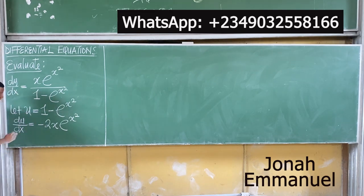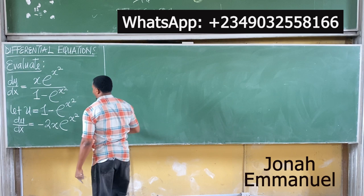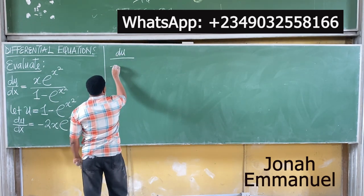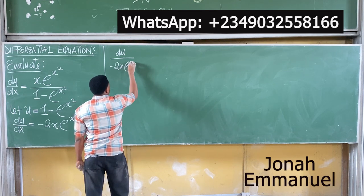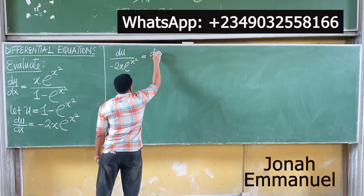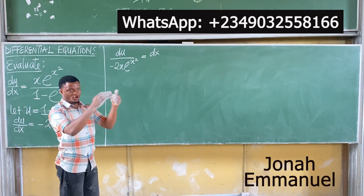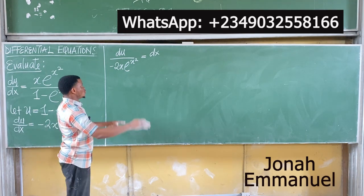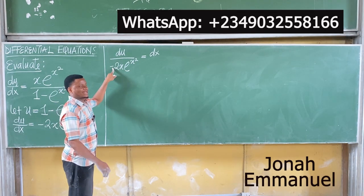Make dx the subject of the formula — these two swap. So dx equals du over minus 2x exponential x squared. At this point in your study, you should know that you do not leave a negative in the denominator — so move it up.